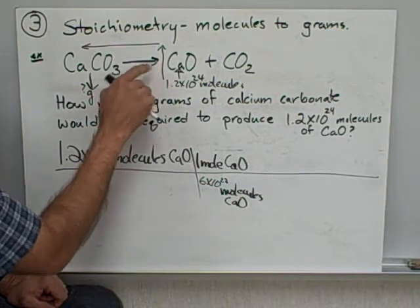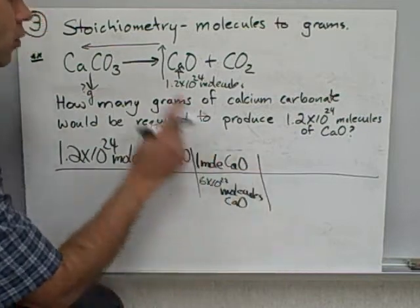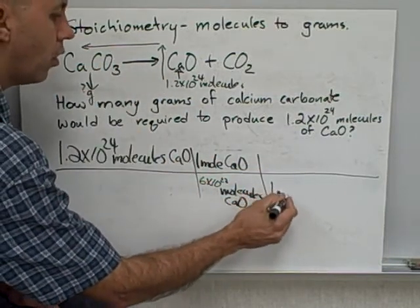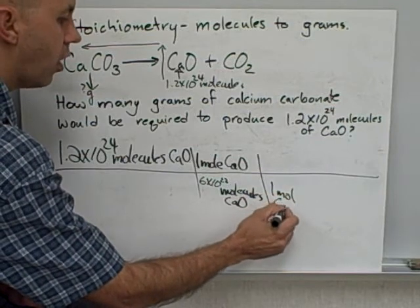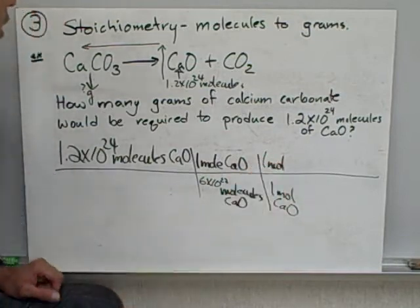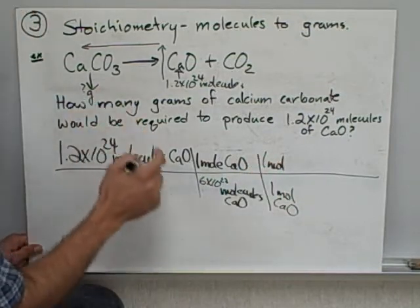Now I've gone from here to there. Now I'm going to look at my mole ratio. What's my mole ratio? One of these to one of these. So I've got one mole of CaO is equal to one mole of CaCO3.